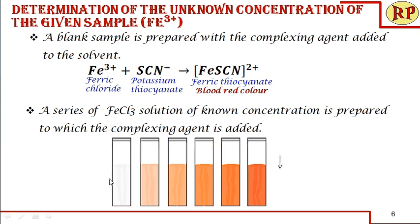Why do we add the complexing agent to the blank sample? It is very essential. All additives should be added to the blank sample except the ions to be analyzed. This is because if any impurities are present in any of the additives which absorb the chosen wavelength, they will be nullified, since we are using the same water and same additives in all cuvettes — we want to analyze only the ferric ions and nothing else should interfere in our analysis.